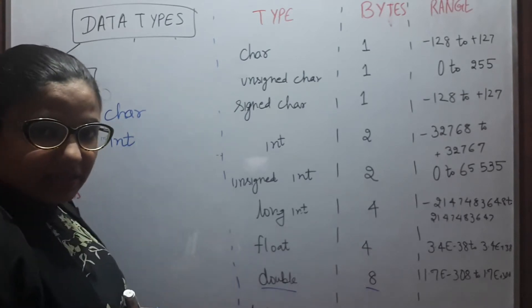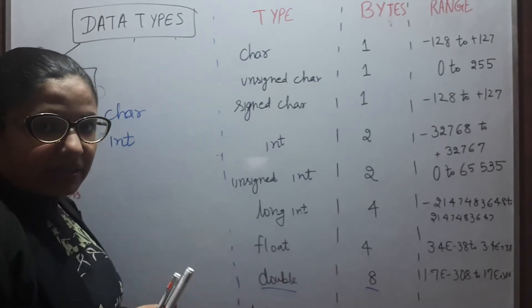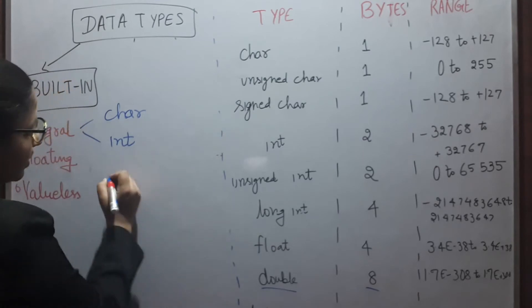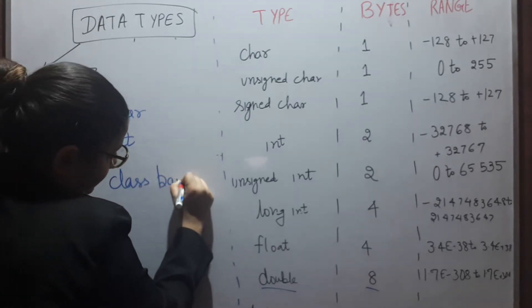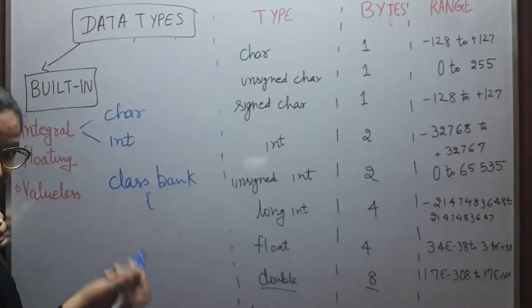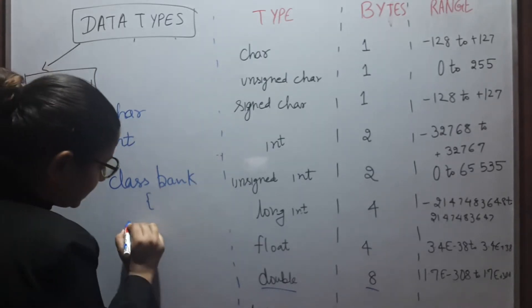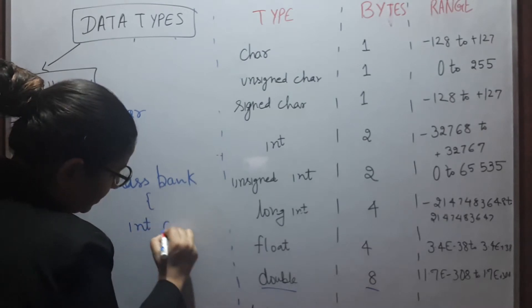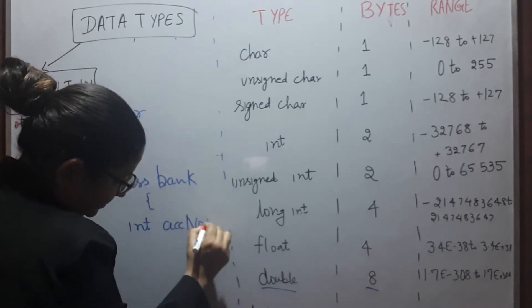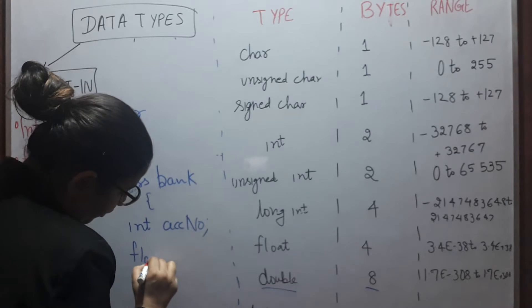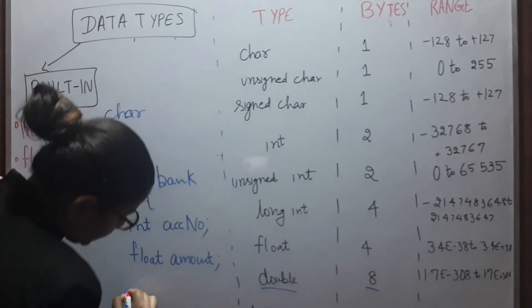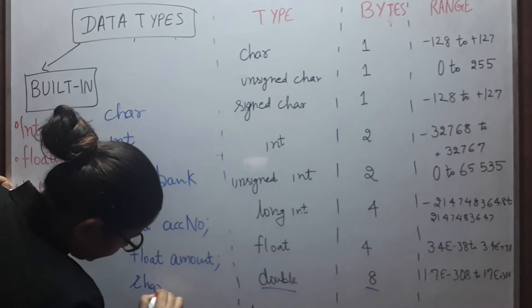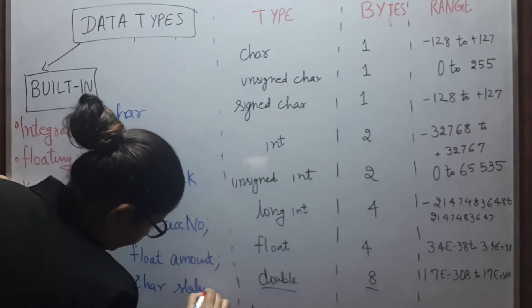Let's understand different data types with an example. We have a class bank. In this bank class, I have three variables: int account number, float amount, char status.